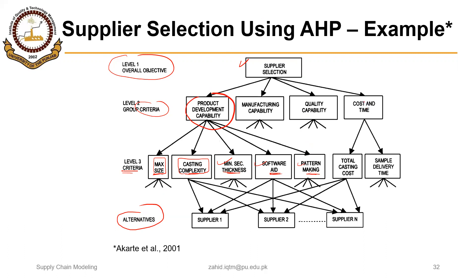Similarly, cost and time is defined to comprise two sub-factors: total casting cost and sample delivery time. The third level contains the alternate suppliers available for the product being outsourced.